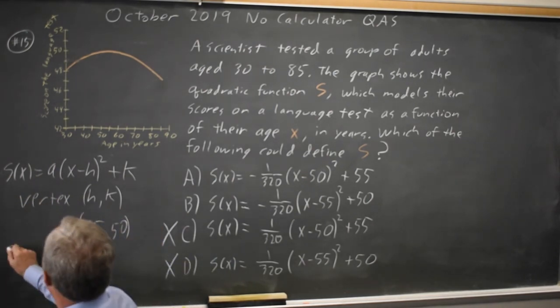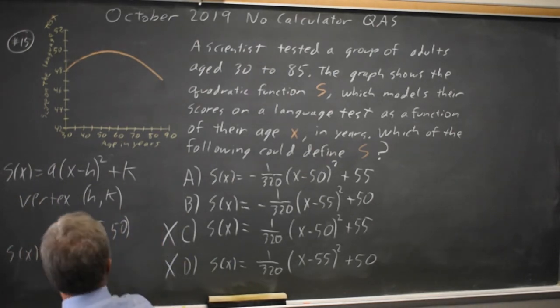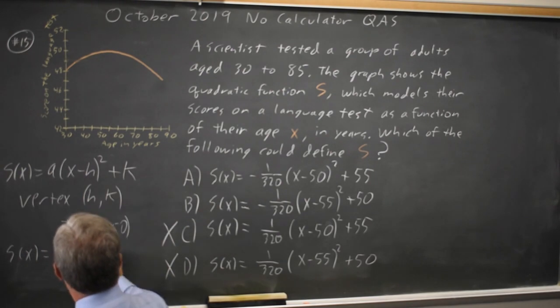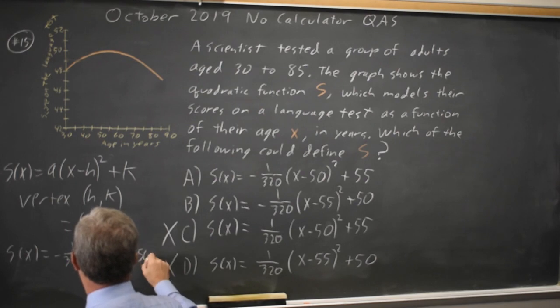S of X equals the only negative A value you can choose as negative 1 over 320, X minus 55 squared, plus K, K is 50, plus 50.